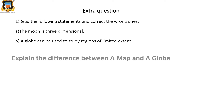Next question: explain the difference between a map and a globe. Make a table and differentiate. One side map, one side globe. I have shown you the difference when I explained the lesson at the beginning. You can write those same differences or your own points. I want a minimum of three and a maximum of four points. For example: map is a two-dimensional object, globe is a three-dimensional object. Think and write more points.